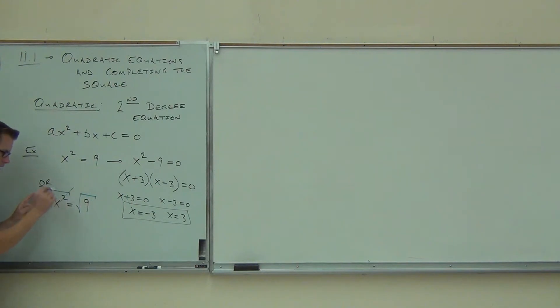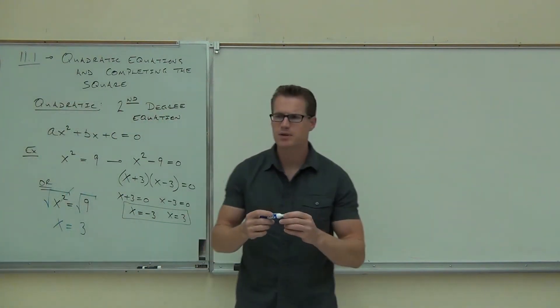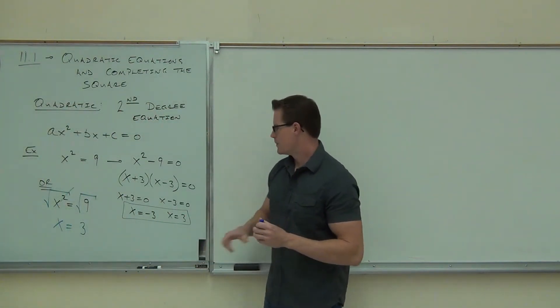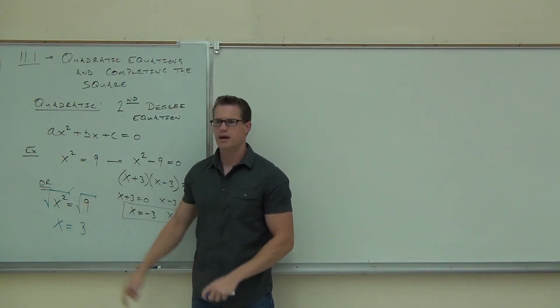What happens on this side of the equation? Square root of x squared. How much do I get? x. That's what I want, right? What's the square root of 9? 3. Something happened. Do you see what happened? How many solutions did we get over here? Two. How many solutions did we get over here? One. That's a problem.